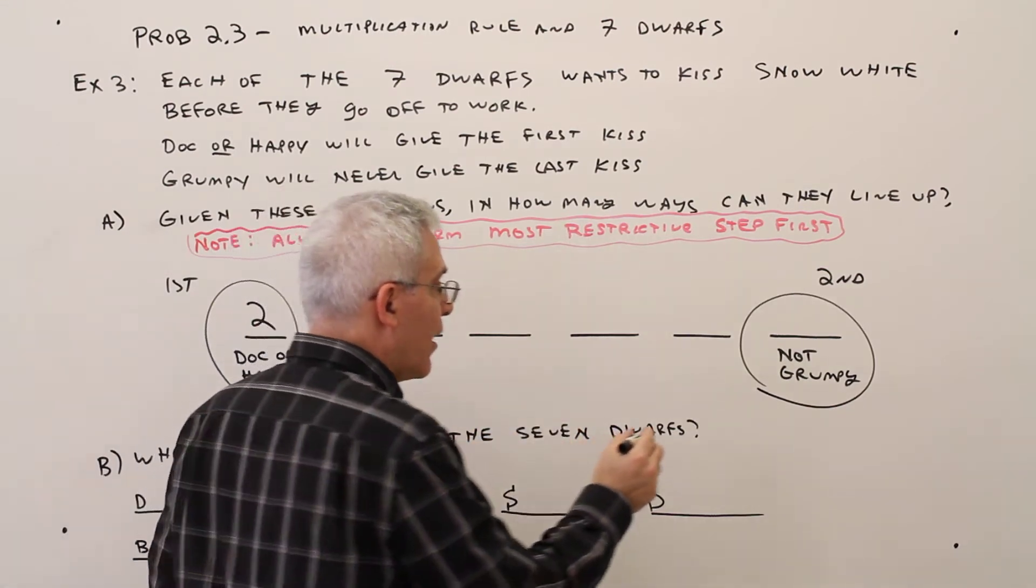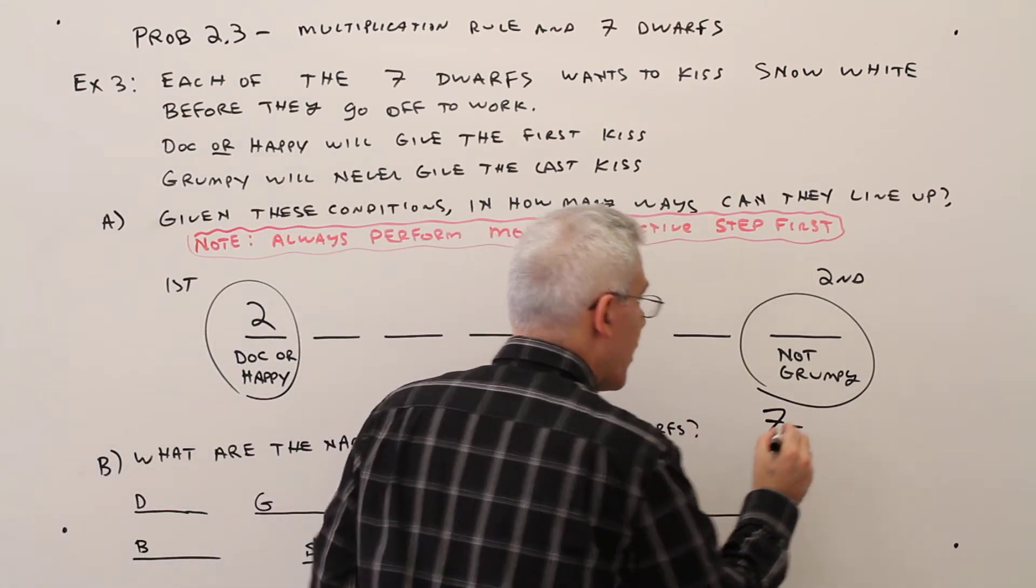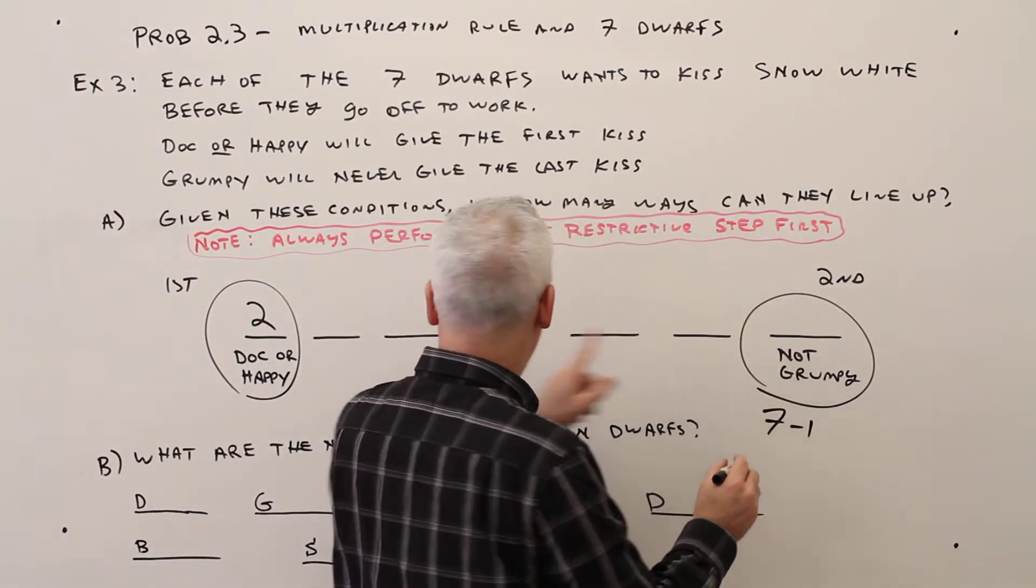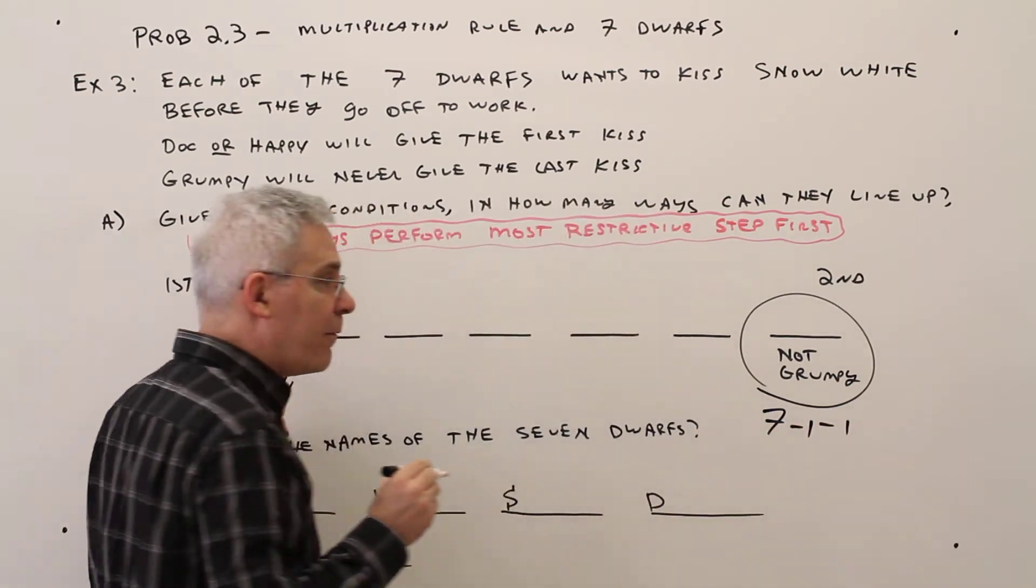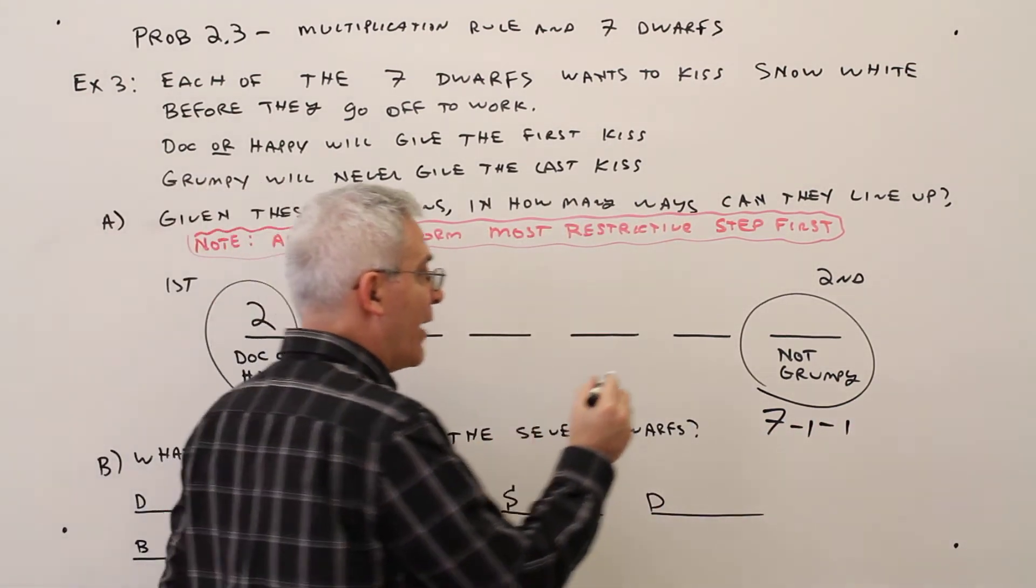All right, so just to show my work, out of the seven dwarves, don't be Grumpy and don't be that one from there. So there's five ways of performing that step.